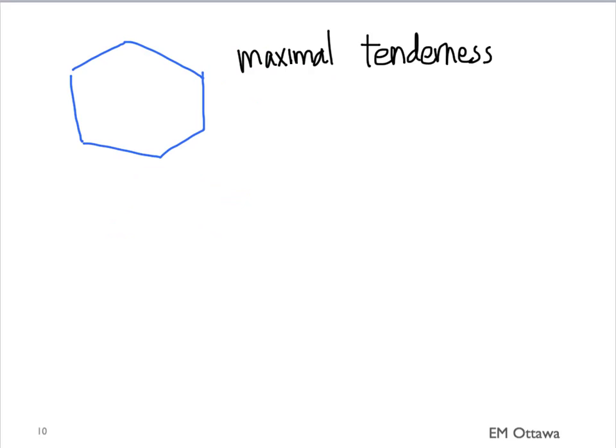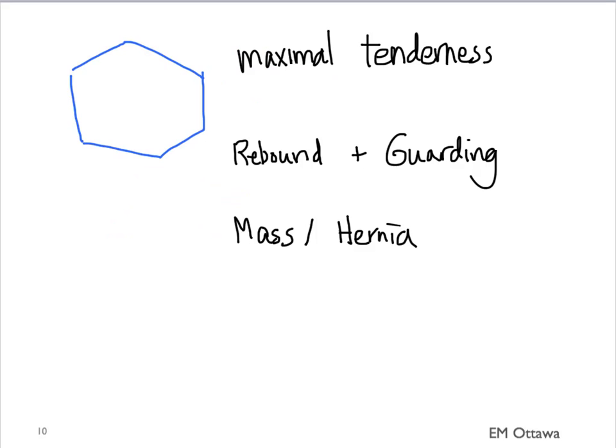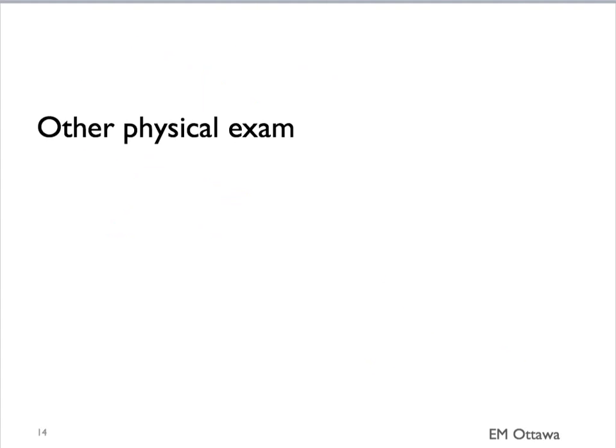If we can localize the patient's maximal tenderness to an area of the abdomen, it helps us localize the diagnosis, similar to what we discussed in the previous video. We're also looking for rebound tenderness and guarding, which suggest localized peritonitis. We'll be palpating for masses and hernias — in the case of hernia, we need to make sure they're soft and reducible. Depending on where the pain is, we might need to look into other systems beside the GI tract.